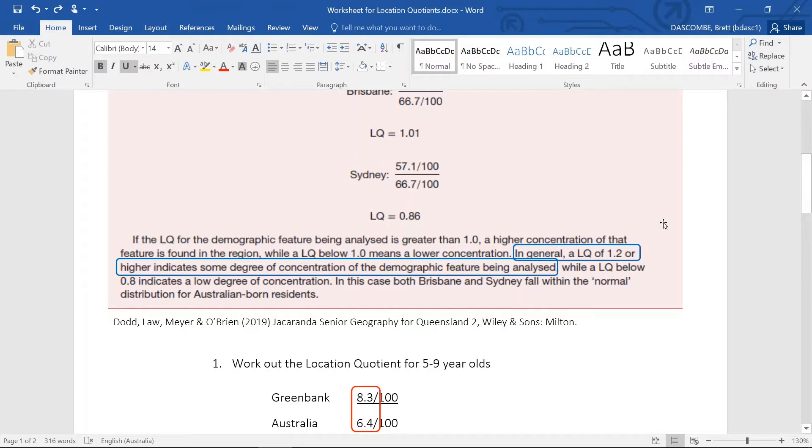Well, those numbers tell us that if the number is greater than one, a higher concentration of that feature is found in the region. Now in general, a location quotient of 1.2 or higher indicates some degree of concentration of the demographic feature being analyzed.